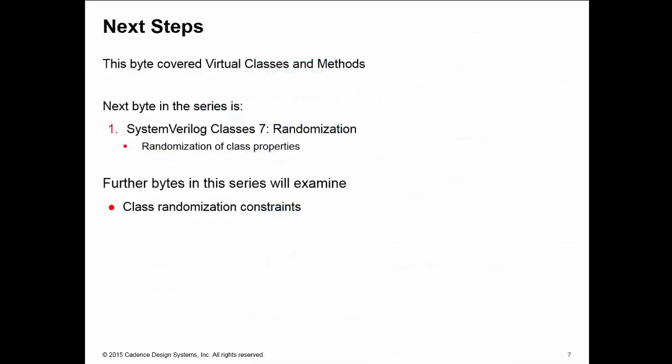This training byte had a quick look at virtual classes and virtual methods. In the next byte we'll have a look at randomization, and the last byte in this series will cover constraints for randomization.